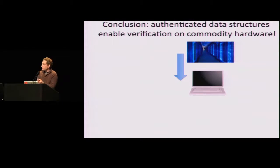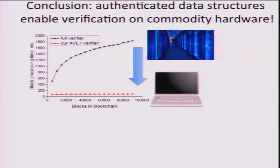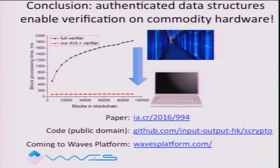To conclude: you can go from expensive machines down to cheap machines if you use authenticated data structures. There's a simulation in the paper showing the time per block to process: the black line is what happens when you go to external key-value storage on a hard drive or solid-state drive, and the red line is what happens when you verify our proofs with hashes instead. The paper is on ePrint, the code is public domain under CC0 license — do with it whatever you want. It will be incorporated into the Waves platform, a multi-token cryptocurrency.